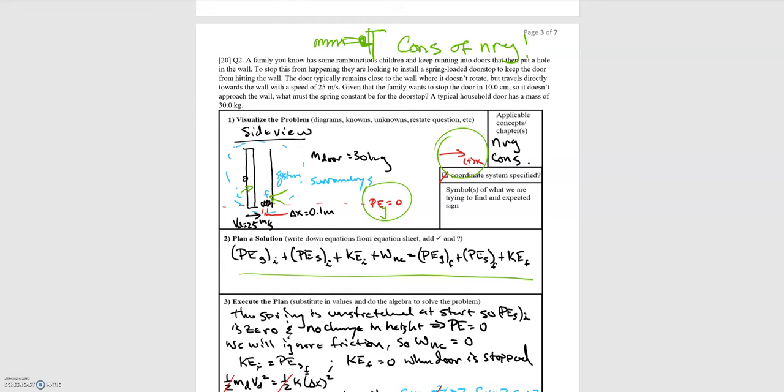So we have no friction acting in this problem. So the work done by non-conservative forces is zero. Like I said, it's not moving up and down. So the gravitational potential energy is negligible in this problem. We don't need to worry about it. We're starting off with the door away from the spring. So the spring potential energy is zero. And so we're just left with kinetic energy at the start. We want the spot where the spring stops the door. So the kinetic energy at the end is going to be zero.